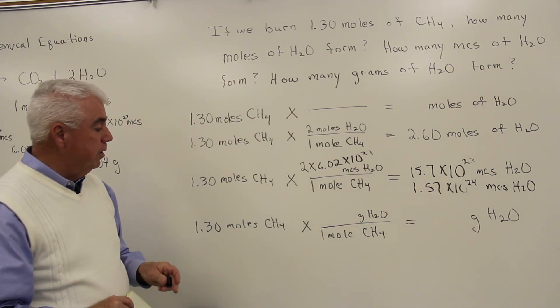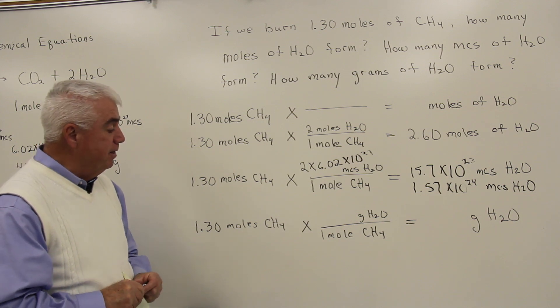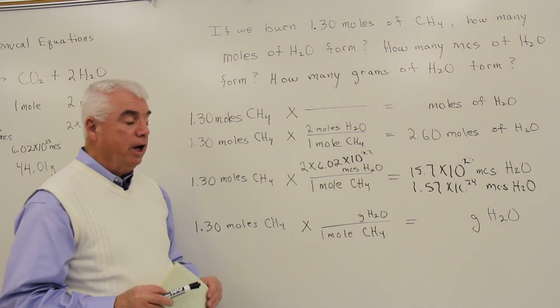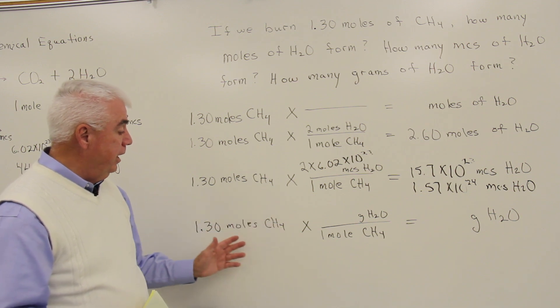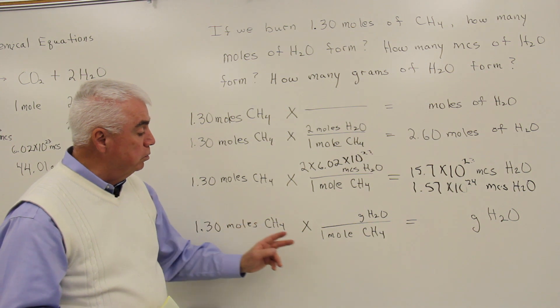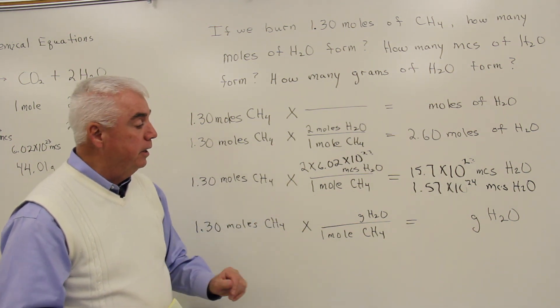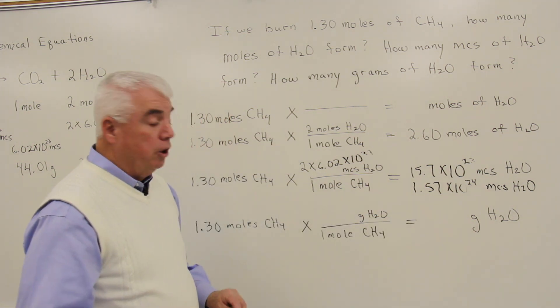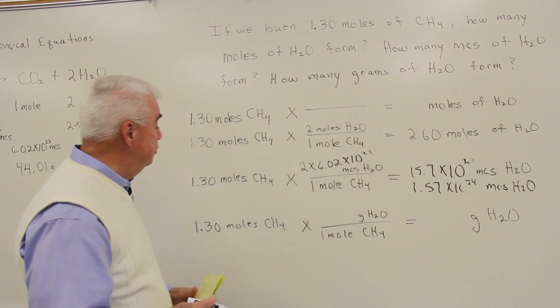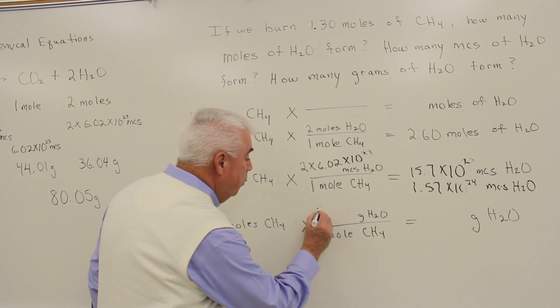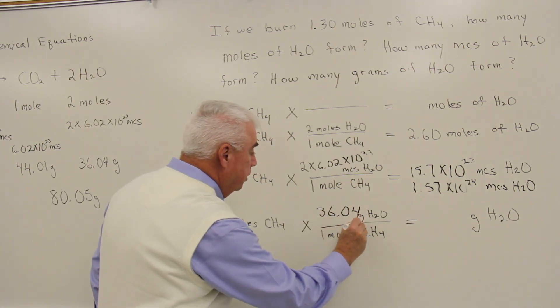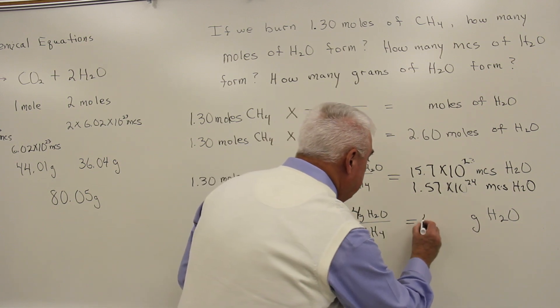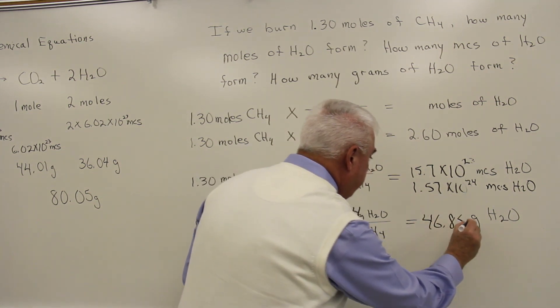And finally, the third problem that we'll work. If we started with a certain amount of methane, how many grams of water will be produced? This certainly would be a useful kind of calculation in the laboratory or in industry. Again, we want to get rid of the units moles of CH4, so here it is in our denominator. We want the unit grams of water in the numerator because that's what we're after. We'd look back to our balanced chemical equation, interpret it in terms of moles. And the number of grams of water that we had was 36.04. And when we multiply now, we get 46.85 grams of water.